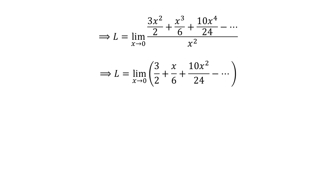We can see that every term of the expression in the numerator has square of x as a factor. So cancelling out the common factor square of x in the numerator and the denominator gives us L is equal to the limit of 3 upon 2 plus x upon 6 plus 10 upon 24 times square of x minus so on, as x approaches 0.